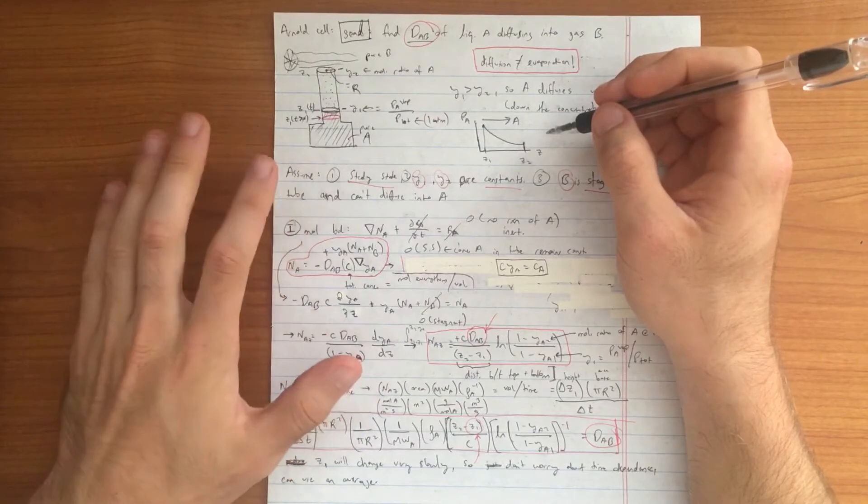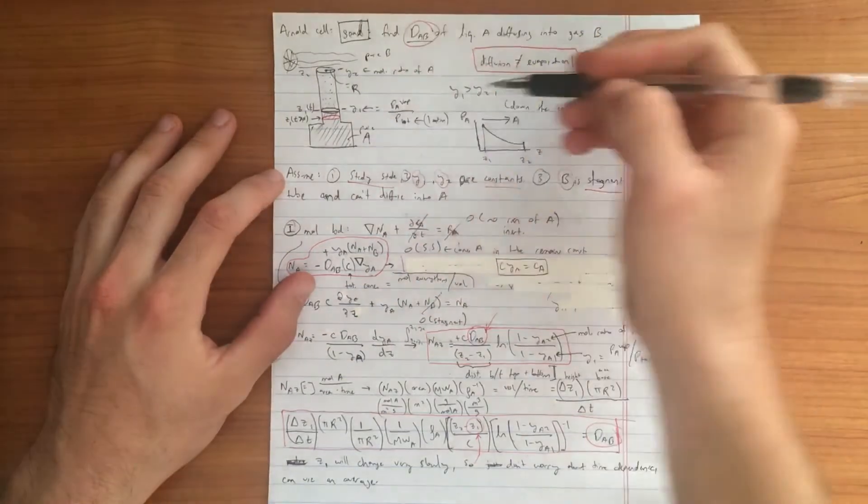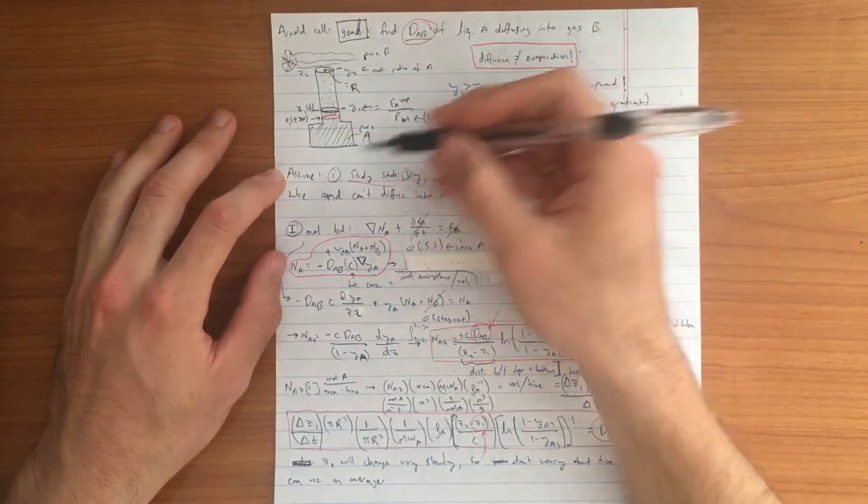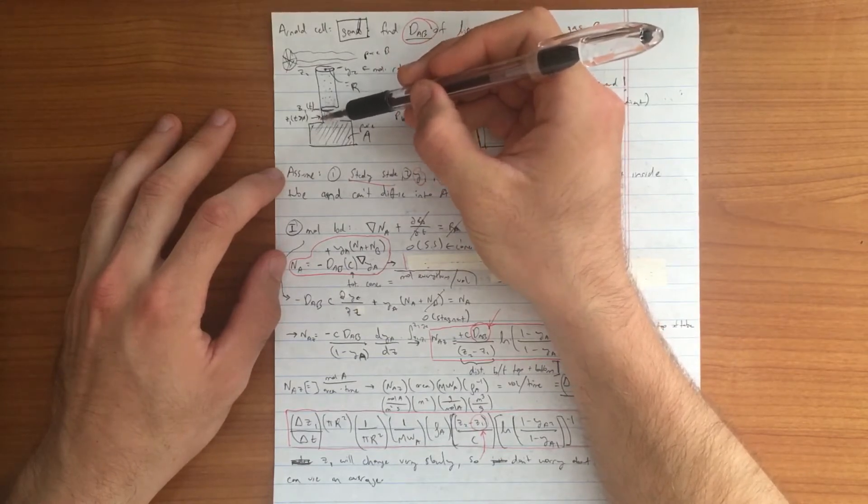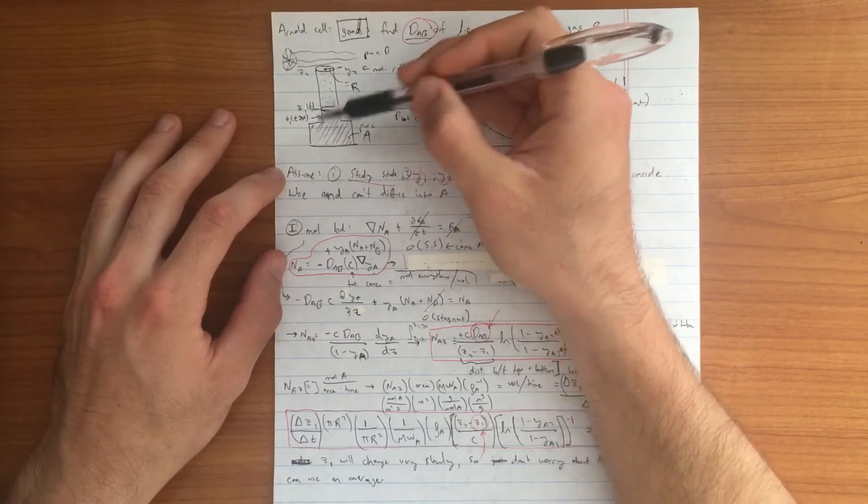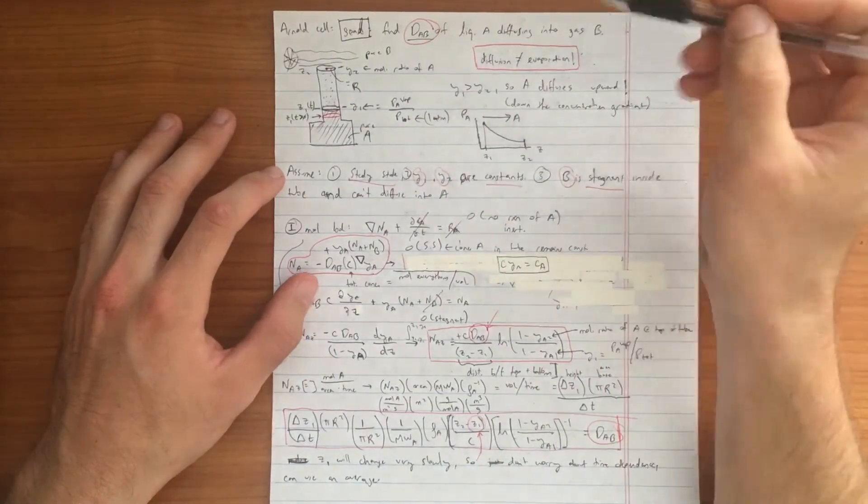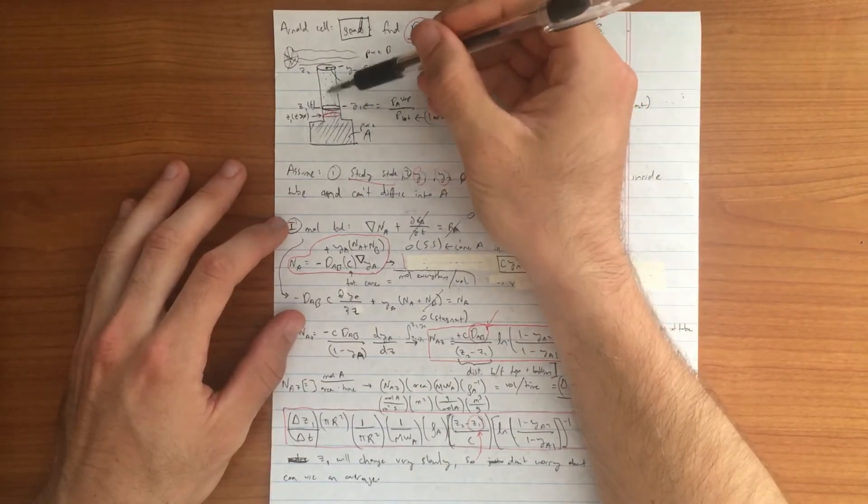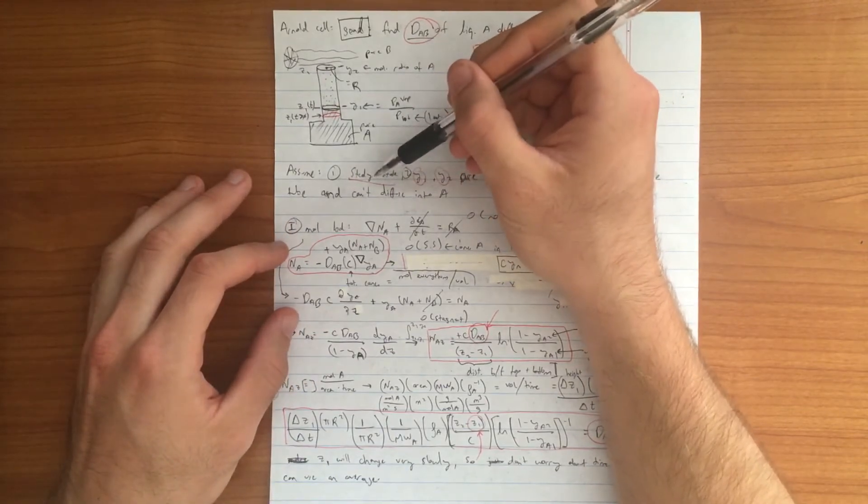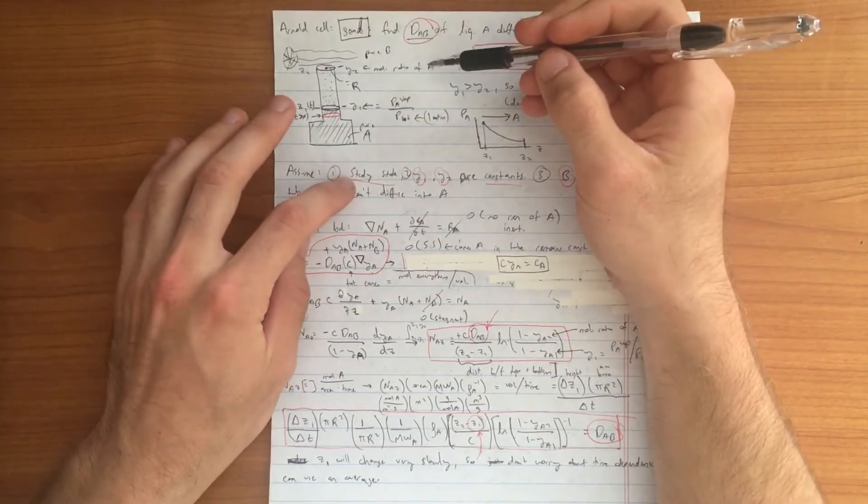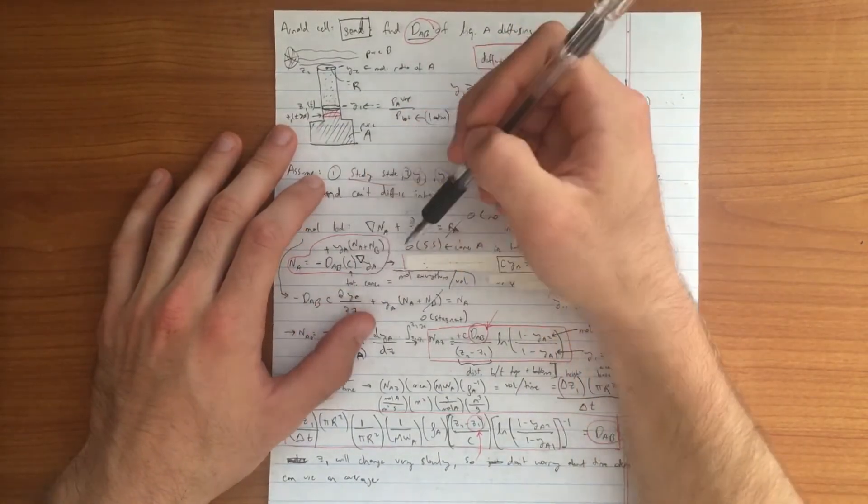To do that we are going to start with making some assumptions and then diving into a mole balance. The assumptions we can make in a typical Arnold cell are that it's operating at steady state. This is a little confusing at first because this position Z1 is actually a function of time. It moves very slowly down because we have A diffusing into B. The mass and volume of A in this region are slowly being reduced over time but it is not evaporation it is diffusion. It is changing slowly enough that we can make a pseudo steady state approximation. The main reason we claim it's steady state is for simplifying our mole balance later on.